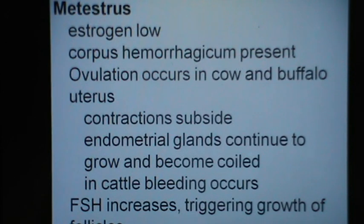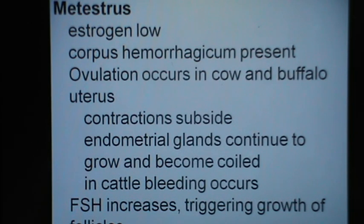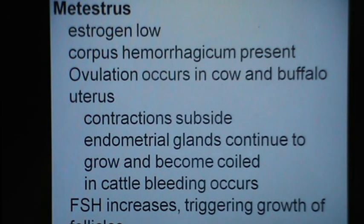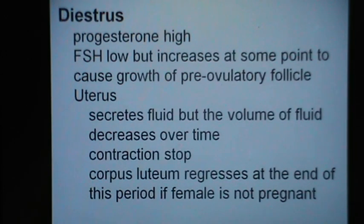The third stage is metestrus. During this stage, estrogen declines and because of ovulation, there is development of the corpus hemorrhagicum as some blood oozes out when the follicle ovulates. Ovulation occurs during this period in cattle and buffalo. Uterine contractions subside, endometrial glands continue to grow and become coiled. In cattle, especially crossbred cattle, some degree of bleeding may occur during the metestrus period — we call it the metestrus bleeding or the post-estrus bleeding. The FSH increases, triggering growth of the follicles, increasing twice: once at day 2 of the estrus and then at day 8 to 10, resulting in a new follicular growth wave.